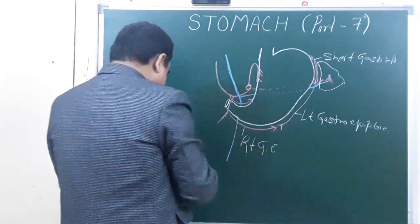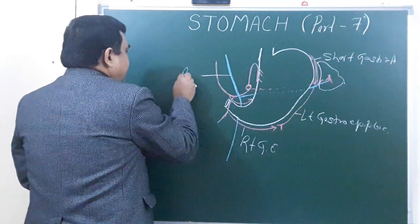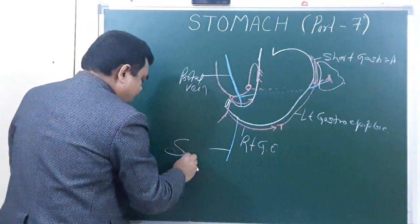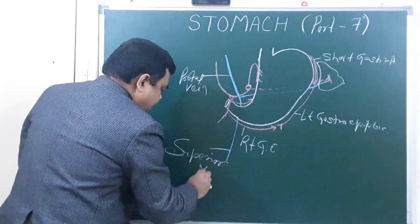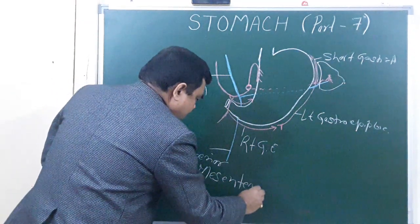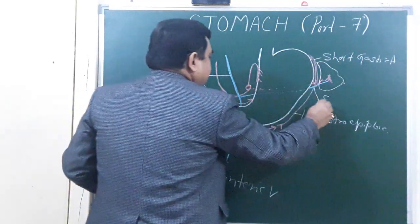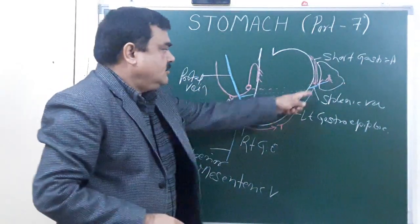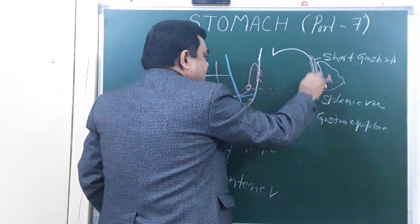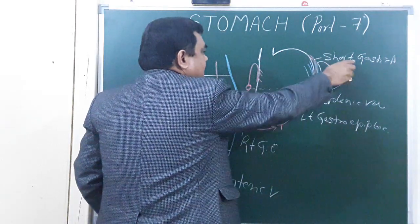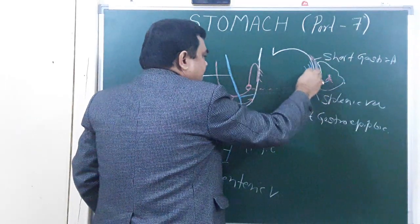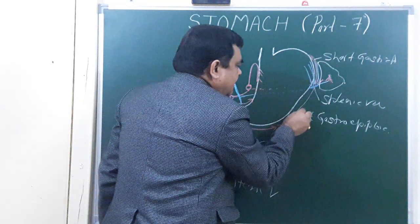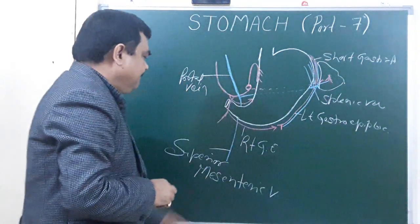So the splenic vein and superior mesenteric vein join to form the portal vein. Here, numerous short gastric veins run along the gastric artery and drain into the splenic vein. The left gastro-epiploic vein also drains into the splenic vein.